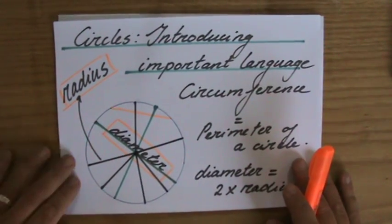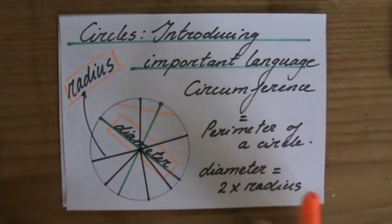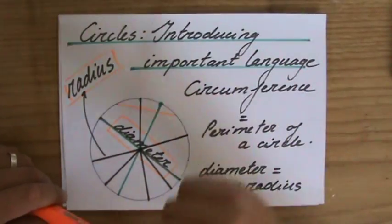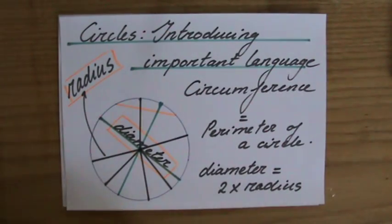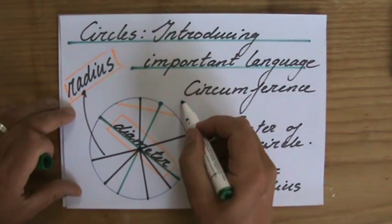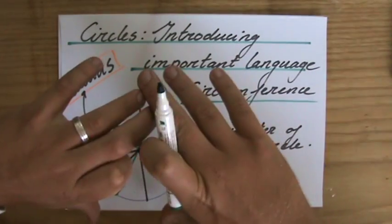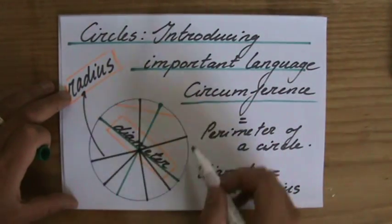Okay. And in future example questions, I will show you again why that is so important to realize. For now, we have introduced a few important words. The circumference, which is the perimeter, if you like, of a circle. The length of the outside.